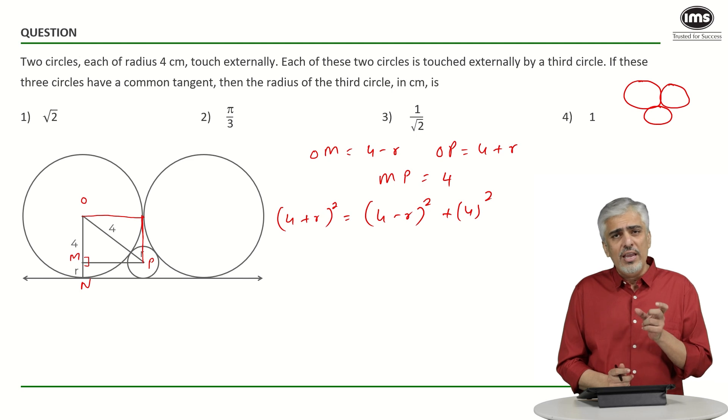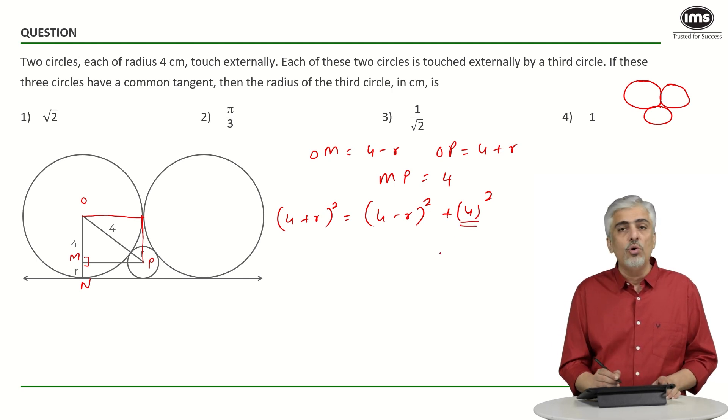Now, if you are paying attention to the options over here, you would have easily realized the answer. What is the most common Pythagoras triplet? 3, 4, 5. Right? If this is 4, there is very high chance that this is 3 and this is 5. And the option also helps us to get it. Answer is 1 directly which is the fourth option. Why? Because 4 minus 1 would become 3 and 4 plus 1 would become 5.